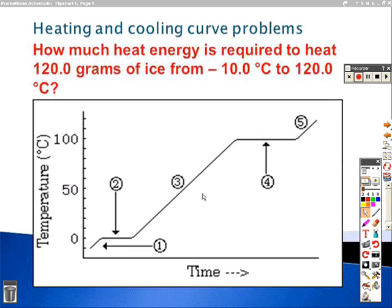We are recording a problem on heating and cooling curves. Right now the baseball team is practicing in the hallway, so we'll see how this goes. Our first problem is: how much heat energy is required to heat 120 grams of ice from negative 10 degrees Celsius to 120 degrees Celsius?